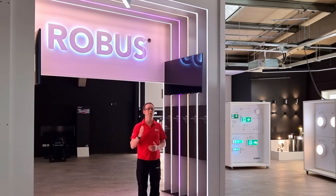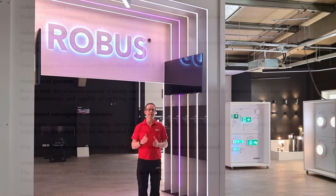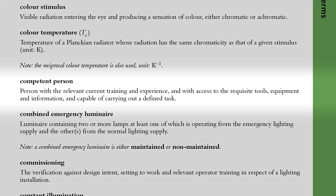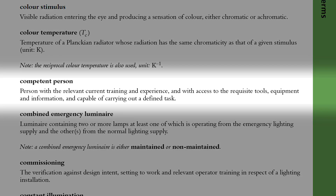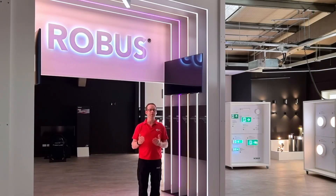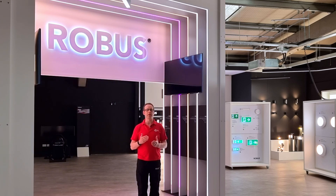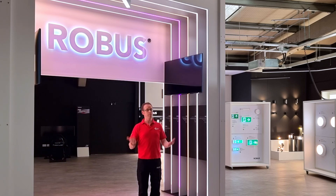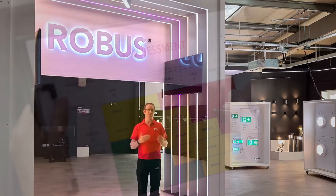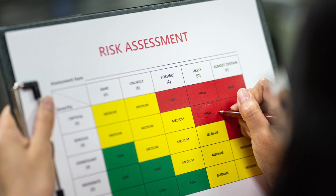For that reason you'll also come across the term 'competent person.' Again, if we turn to the glossary of the SLL Lighting Handbook, it defines this as a person with the relevant current training and experience, and with access to the requisite tools, equipment and information, and capable of carrying out a defined task. It is possible that the responsible person may meet those requirements, so the responsible person and the competent person may be the same person. For example, the responsible person carrying out the fire risk assessment must have the competence to do so.